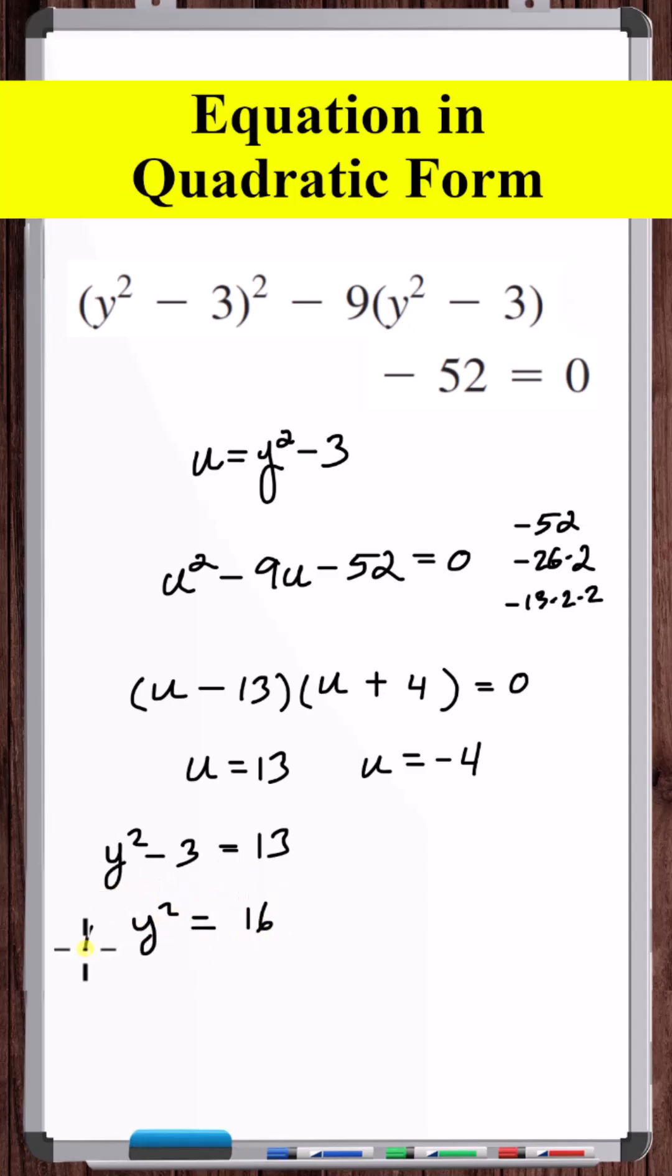Add 3 to both sides. Take the square root of both sides. We'll need to apply the square root property. So put a plus or minus. So y is equal to plus or minus 4.